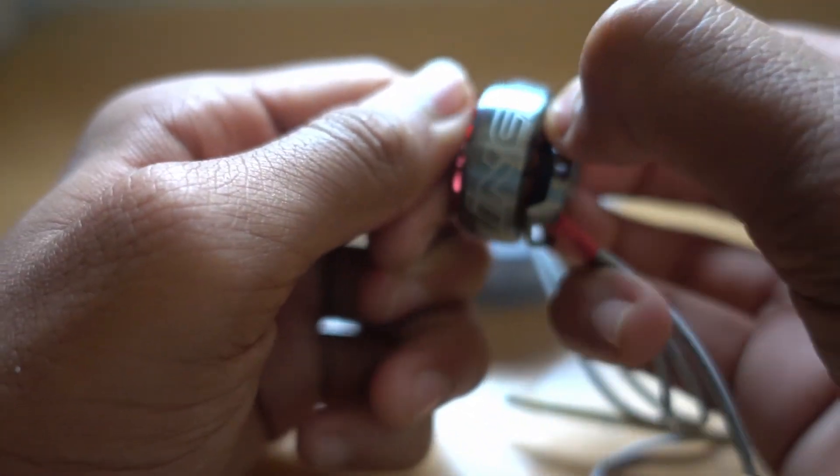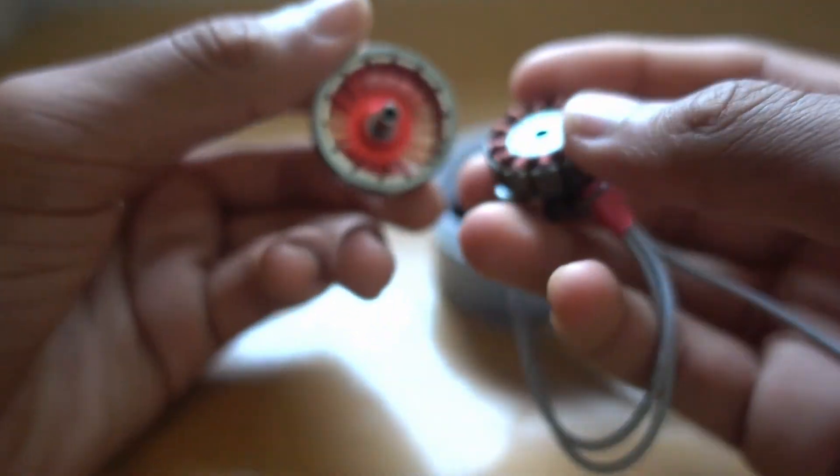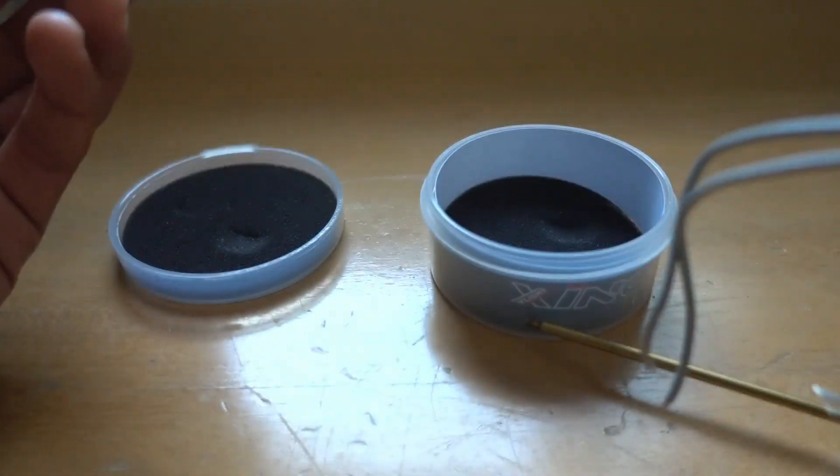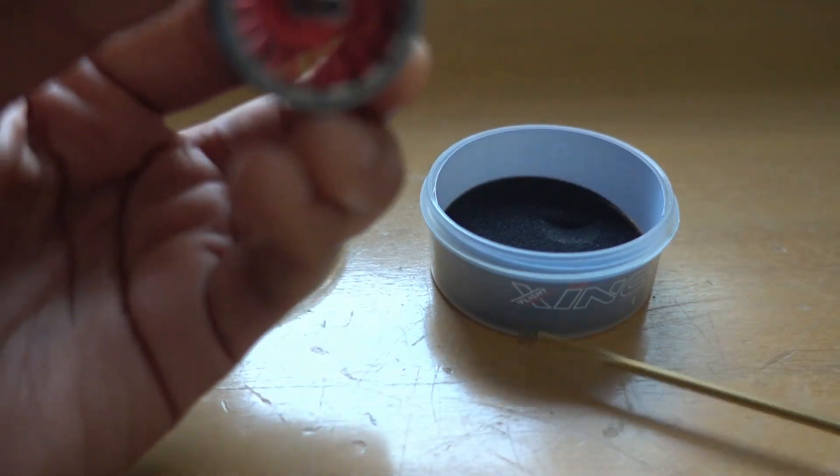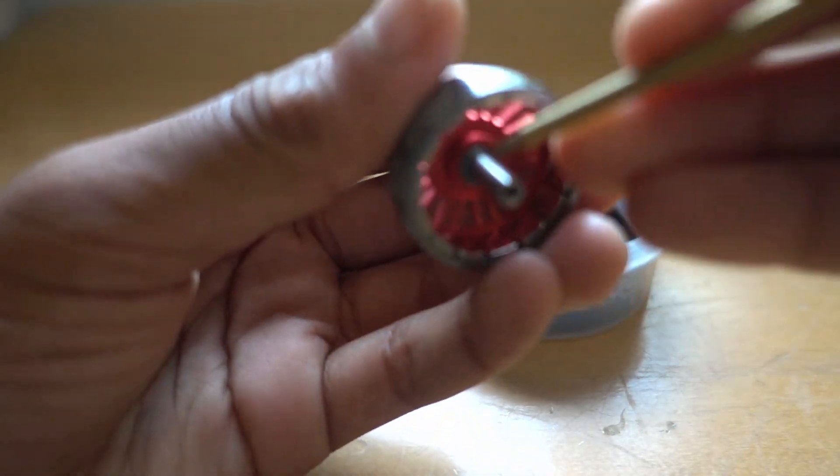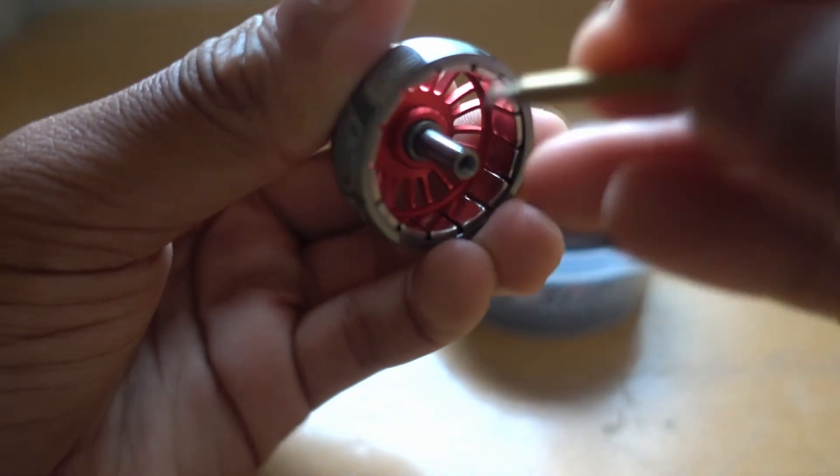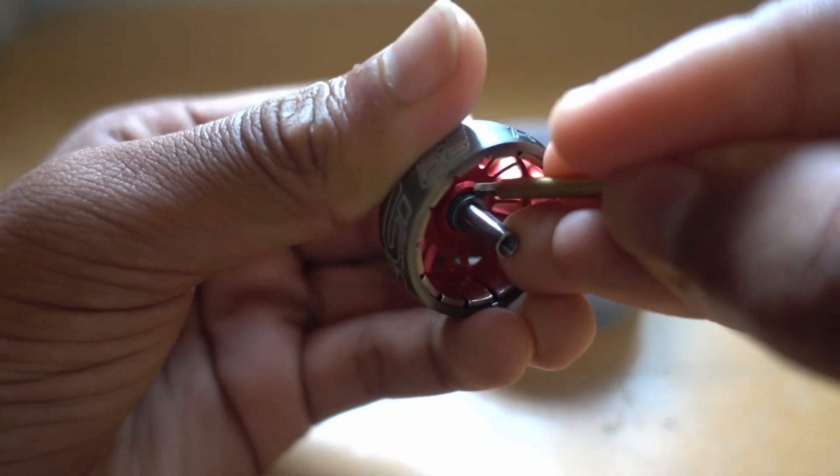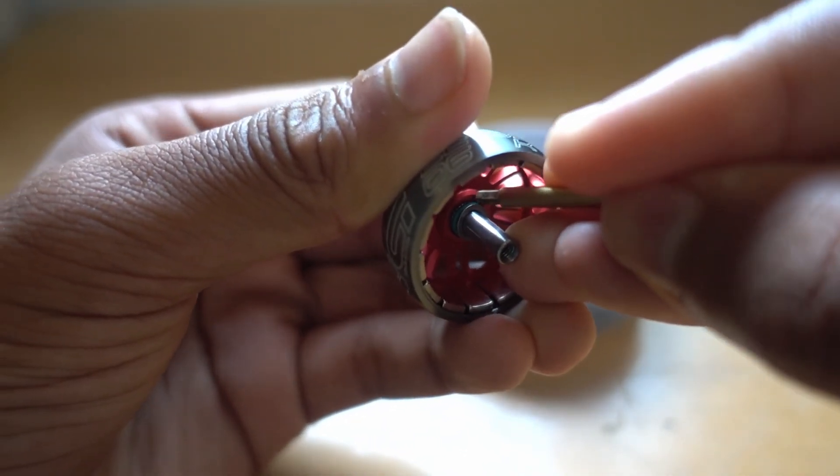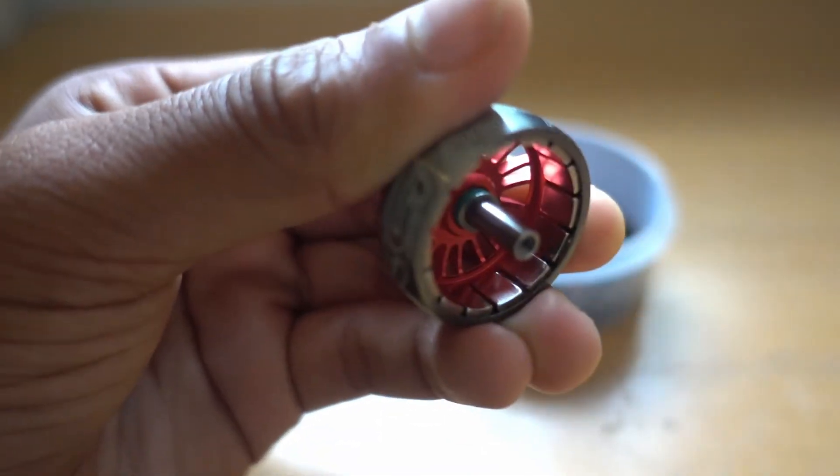I yank it out. You can notice that, you can see this washer here. So there's a washer. And behind the washer, if you notice, I kind of pushed it down. You can see this green O-ring.